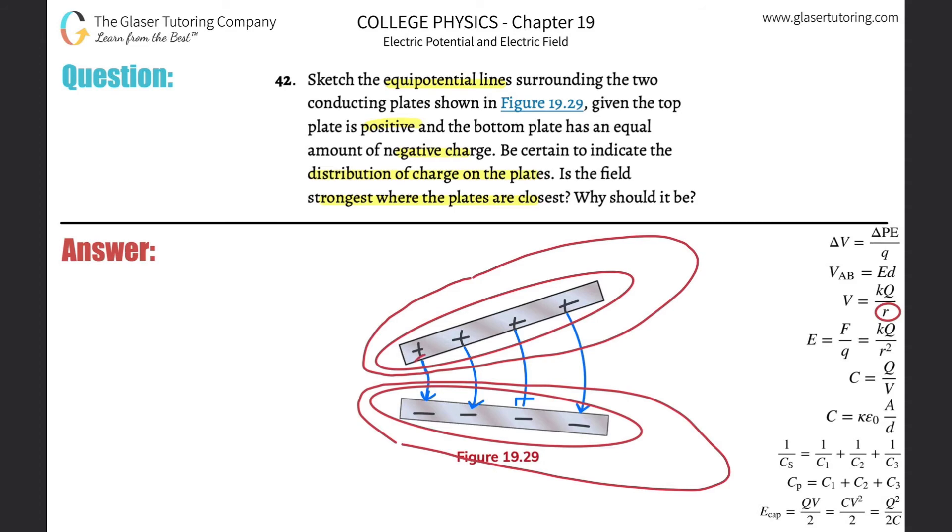It's going to be the strongest in this region where they're closest. Why should it be? It's according to the formula. The potential always will change as a function of distance relative to the charge. Remember, if you know the electric field lines, they always point towards decreasing potential. Increasing potential will always point in the opposite direction.